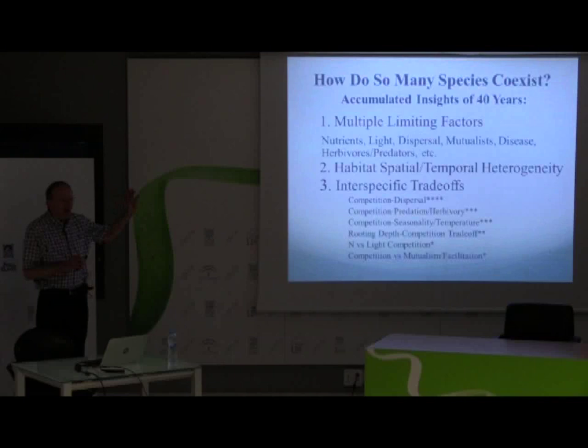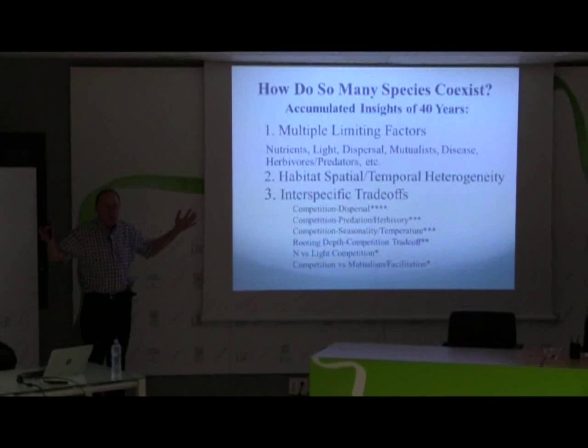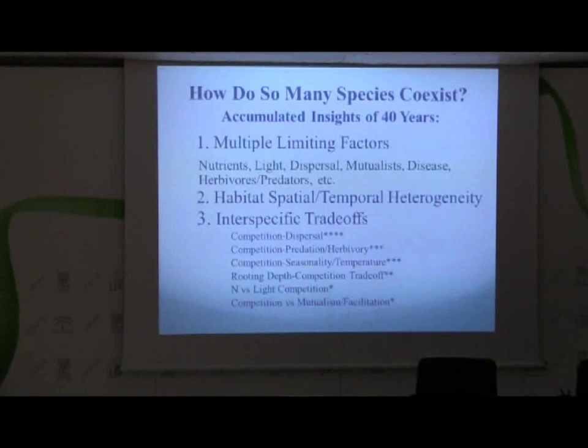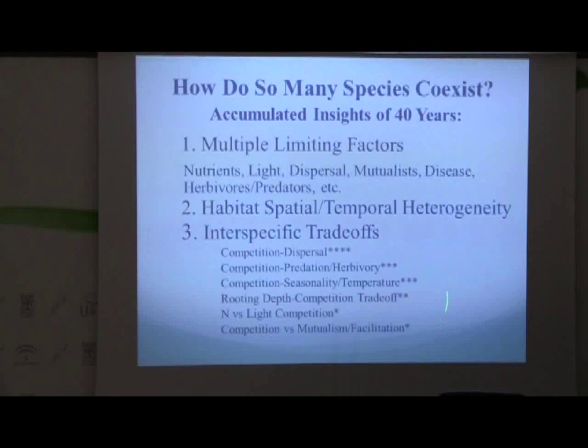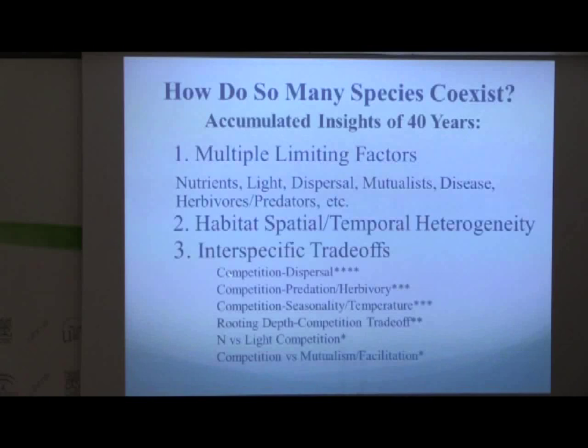Trade-offs are really the theme of my talk today. Trade-offs imply that for an organism to get better at doing one thing, it has to become less good at doing something else. If there weren't such trade-offs, there would be the one best way of being a plant and the one best way of being an herbivore and the one best way of being a predator. We know that's not what has happened in the last three billion years of evolution of life on Earth. In my system — the grasslands I've studied in the central part of the United States, prairie grasslands — these are the main trade-offs I've seen for our plants.